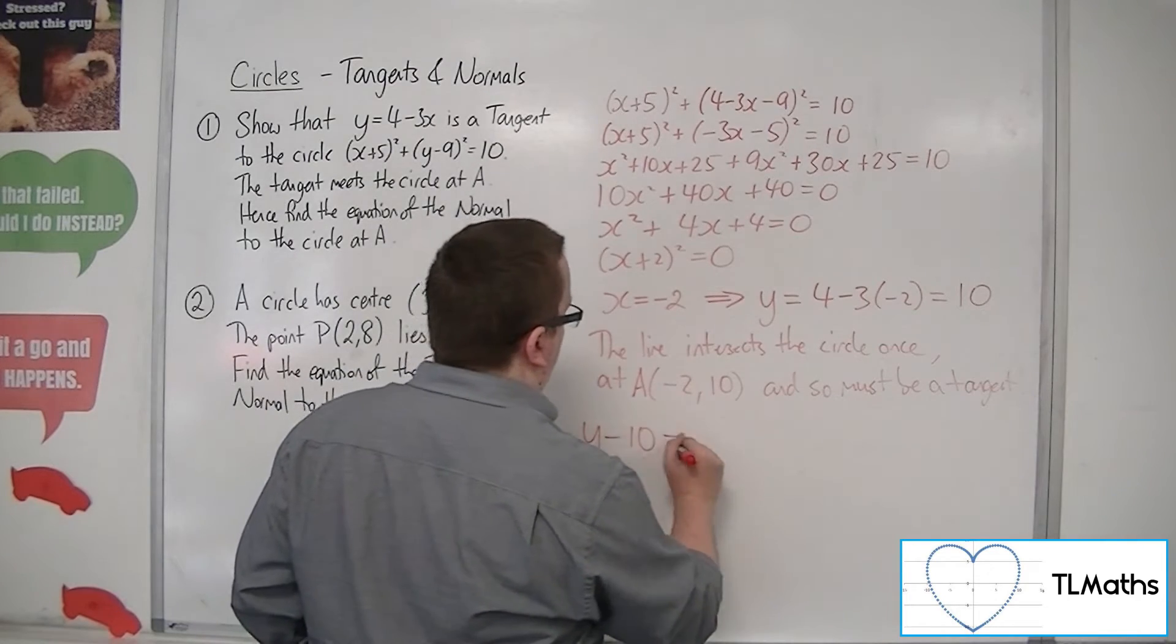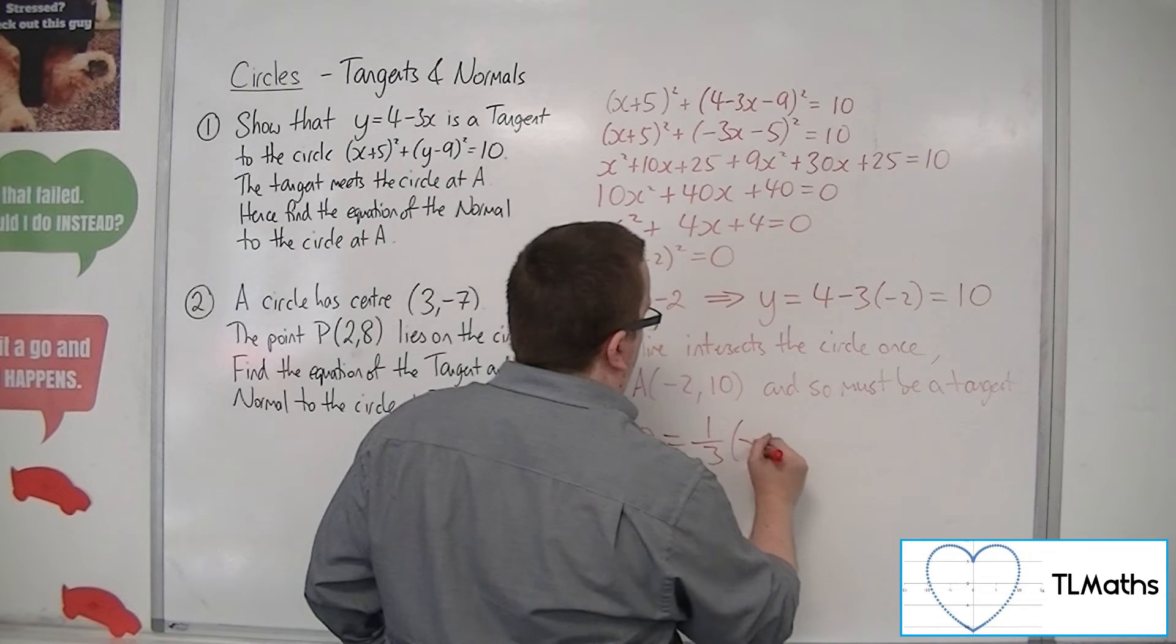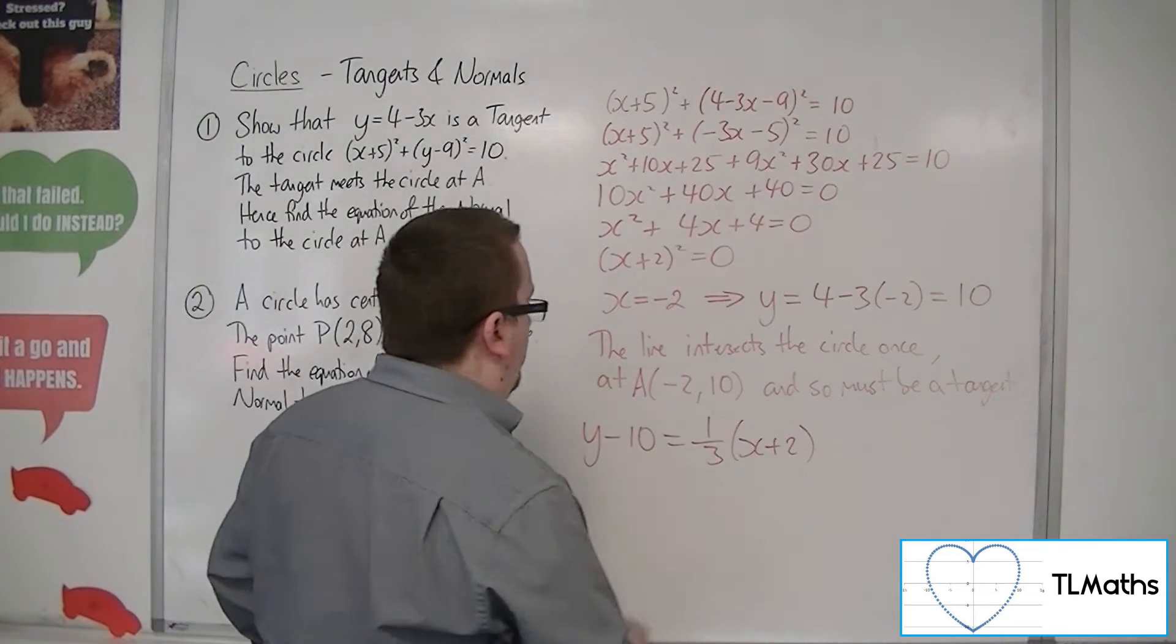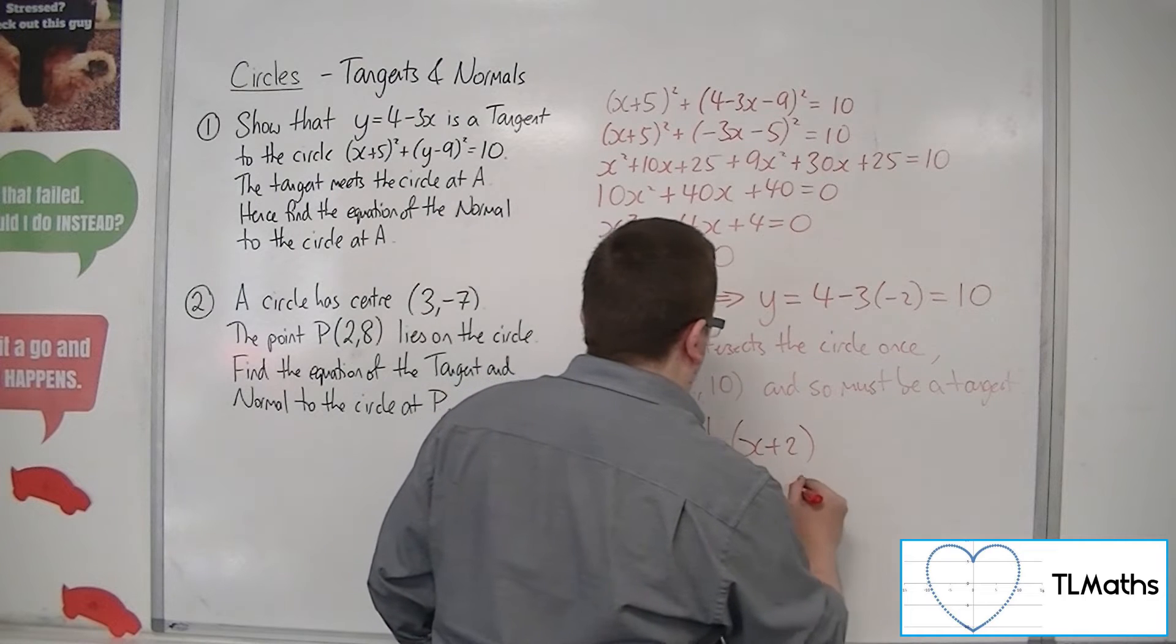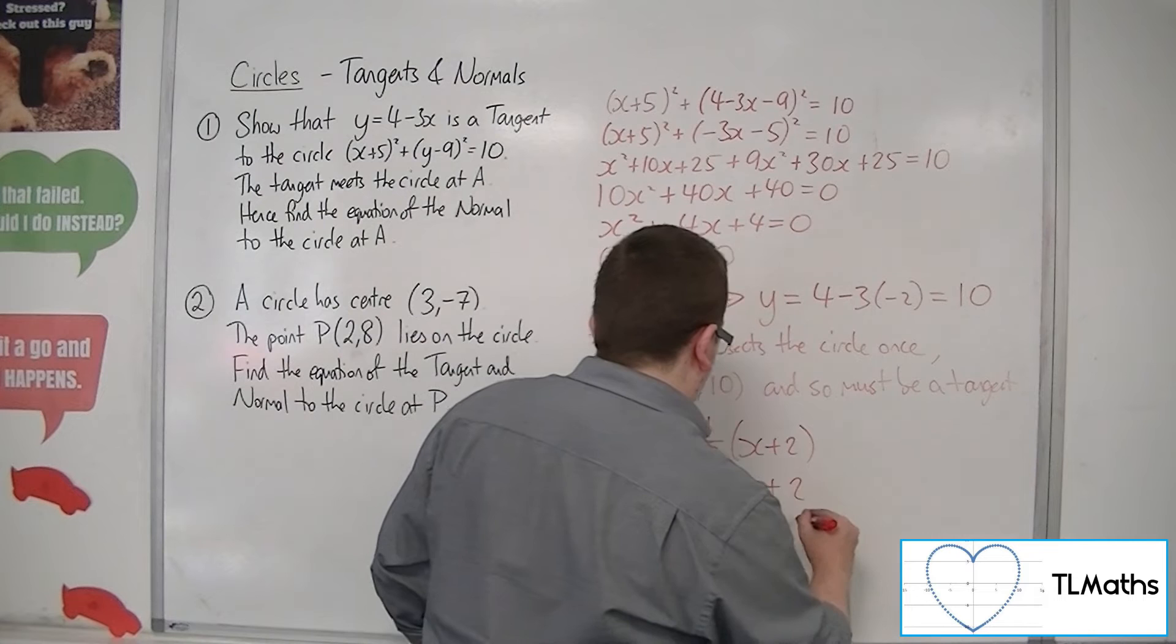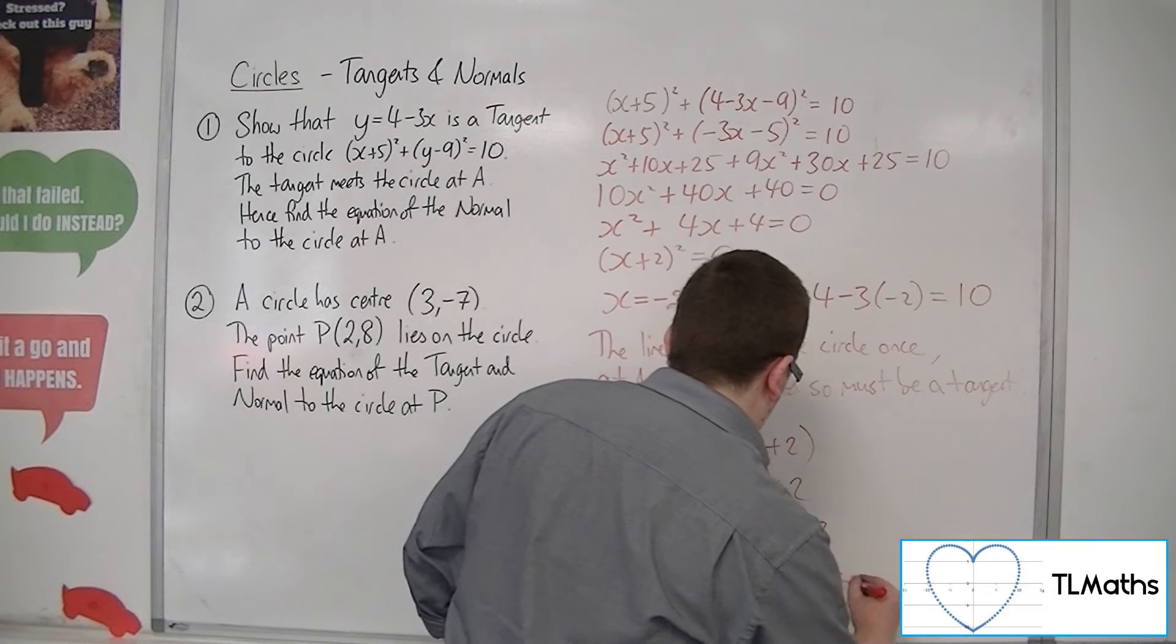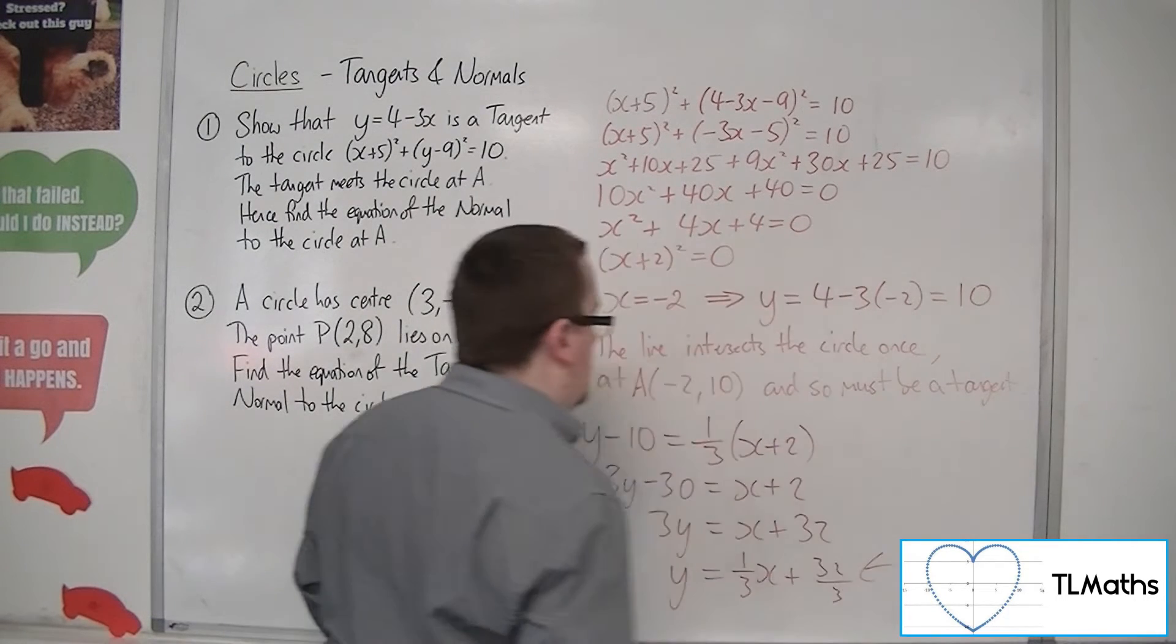So y minus 10 is equal to m, which has got to be a third, x plus 2. To be going through A. So if I multiply everything by 3, 3y minus 30 is x plus 2. Add the 30 to both sides. And then divide both sides by 3.